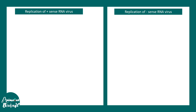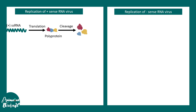Now let's compare the replication strategies of positive sense RNA virus and negative sense RNA virus. The positive-stranded RNA virus can be directly translated and give rise to different proteins; generally it forms a polyprotein which is cleaved into respective proteins. This positive strand RNA works like a normal mRNA — it can be recognized by the host cell ribosome and give rise to protein.